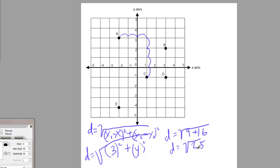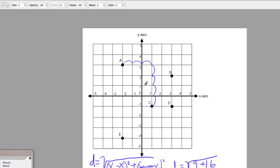What times itself is 25? 5. So d equals 5. 5 is the square root of 25. So the distance between A and C is 5 units.